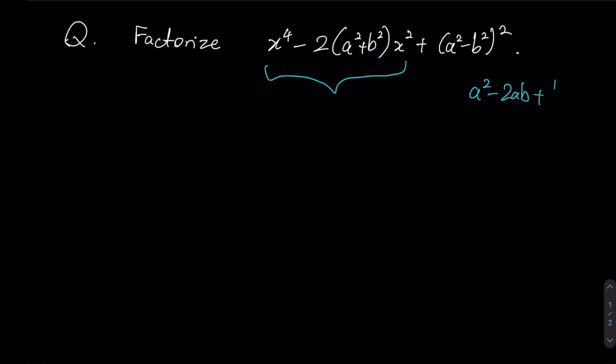But we do know that we eventually want to make a form of a² minus 2ab plus b² from these two first terms over here. So let's see how that can be done. This can be written as x⁴ minus 2(a²+b²)x². So notice if this here is your b, then therefore the term that comes after must be the square of that term. And this is how we complete the square for the first three terms.